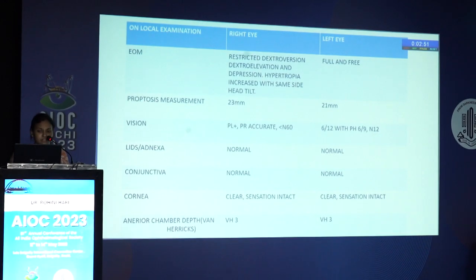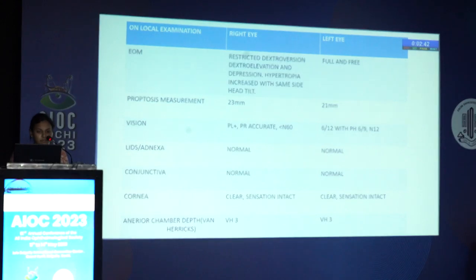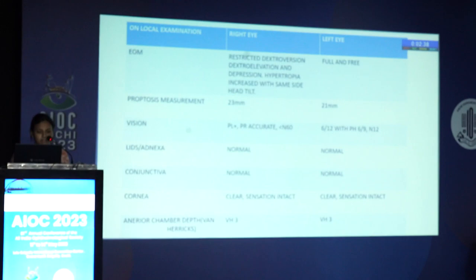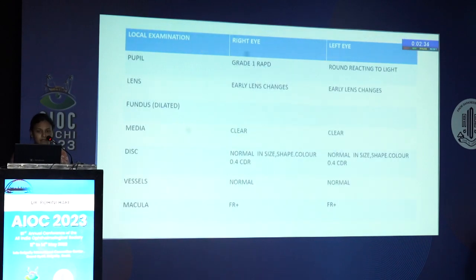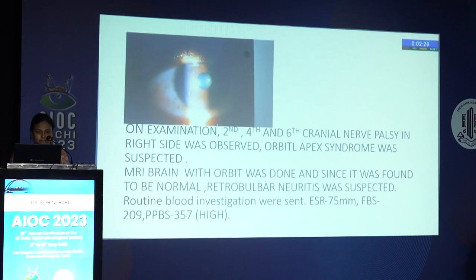On examination, extraocular movements in the right eye were restricted — restriction in dextro-elevation, depression, and dextroversion — with hypotropia which increased with ipsilateral gaze. There was proptosis of 23 mm. Vision was perception of light positive and projection accurate. Anterior segment was normal. A grade one RAPD was observed in the right eye pupil. Fundus was normal. Left eye anterior segment and fundus appeared normal.